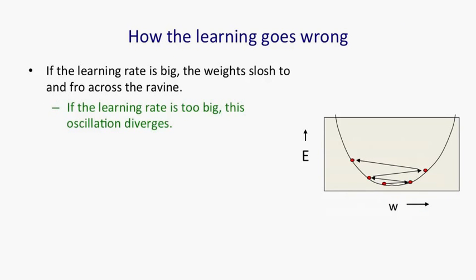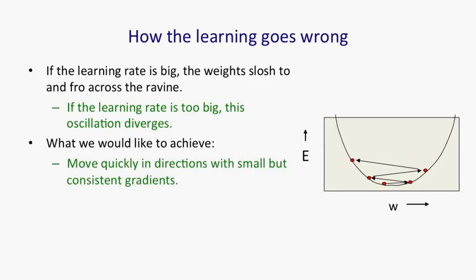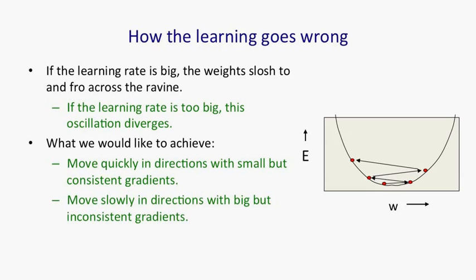So the way the learning goes wrong if you use a big learning rate is that you slosh to and fro in the directions in which the error surface is very curved. We'll call that sloshing across a ravine. And with the learning rate too big, you'll actually diverge. What we want to achieve is that we go quickly along the ravine in directions that have small but very consistent gradients, and we move slowly in directions with these big but very inconsistent gradients. That is, if you go in that direction for a short distance, the gradient will reverse sign.